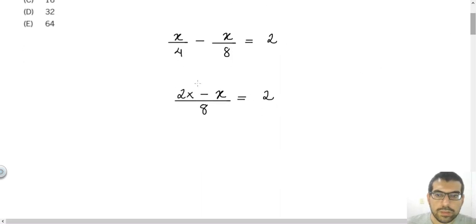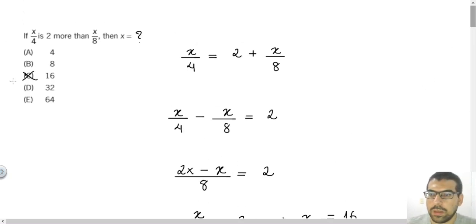Then you can just note that 2x minus x will be x. x over 8 will be 2, and then you can think that this 2 is 2 over 1. You can do a cross product here: x times 1 will be x, and 8 times 2 will be 16. So 16 is the answer of the first question, letter C. Let's go to the next one.